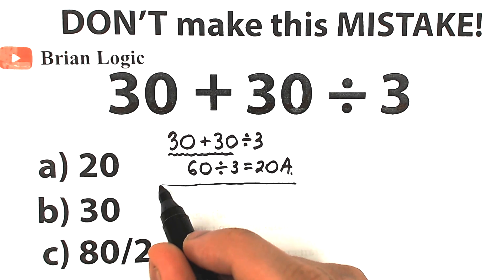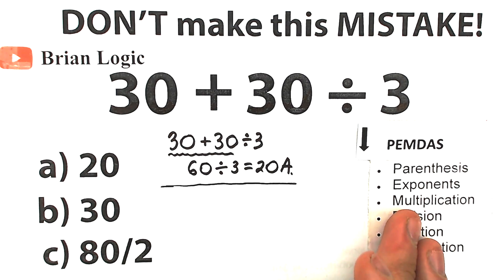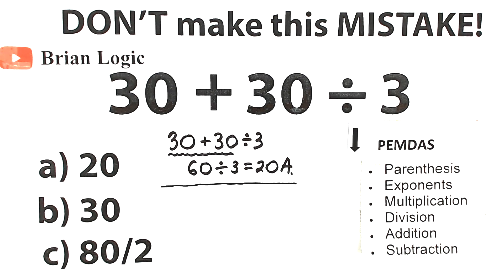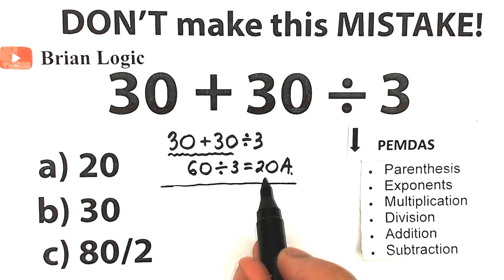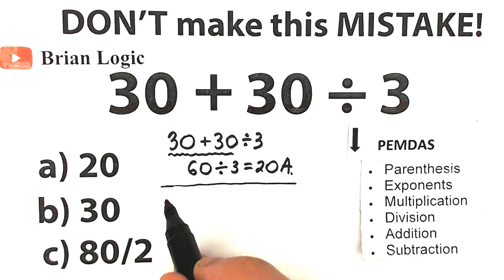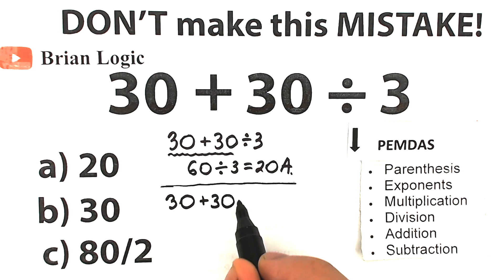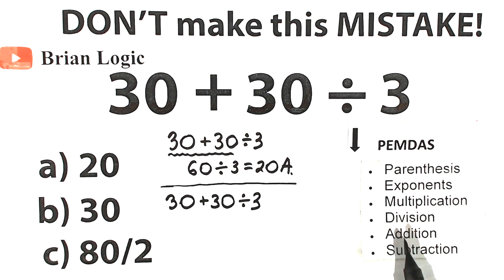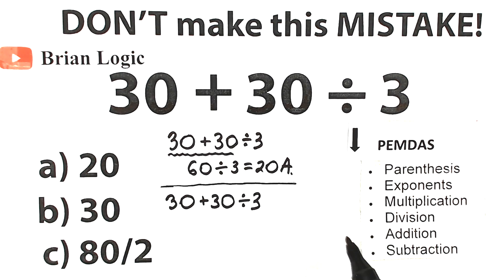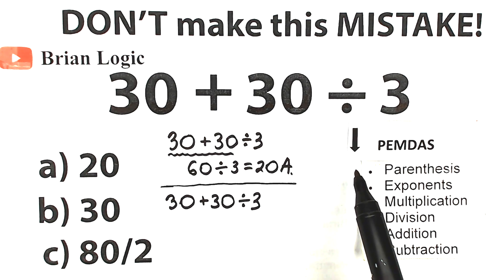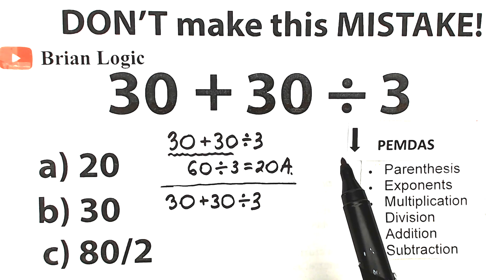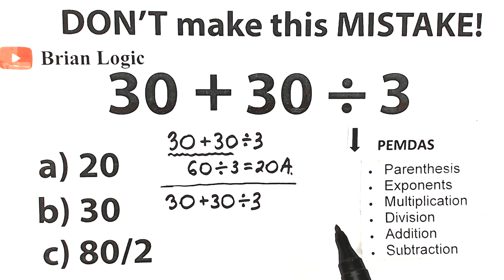For this question we need to know about order of operations. Let's look at PEMDAS — this is the most popular order of operations in the world. Right now let's solve this question according to PEMDAS. Here's our prediction: maybe 20 is a correct answer, but let's write this question once more and solve it according to PEMDAS. We have 30 plus 30 divided by 3. We go through the steps from top to bottom and then we will have a correct answer.